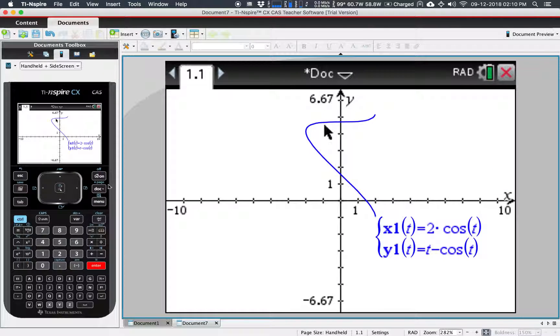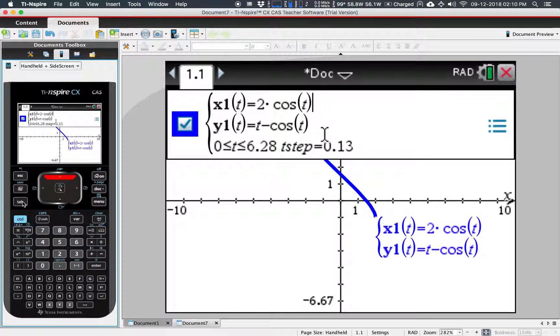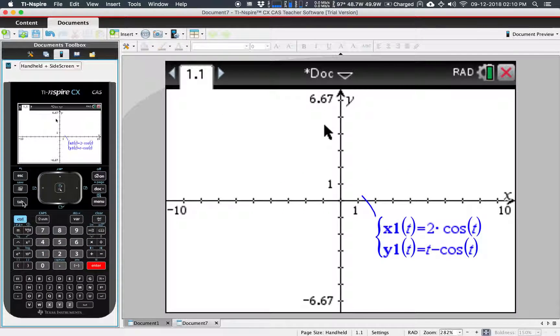Hit tab and then go up to the graph. Instead of going from zero to two pi, just go to 1 and you'll see it draw that part.